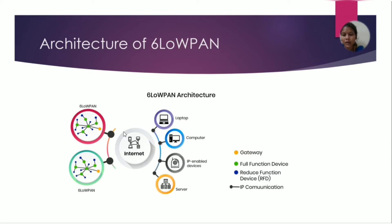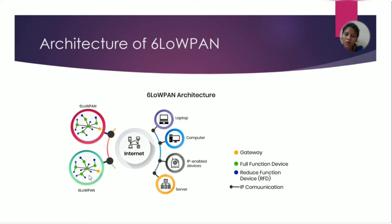If you want to communicate with 6LoWPAN, the wireless network connects wireless sensors — that is, low-power devices — and laptops, computers, and mobile phones as high-power devices. If a low-power device connects one-to-one, data is stored and communicated directly. Between low-power and high-power devices, the router acts as an H-router. Through the H-router, the internet is connected to 6LoWPAN using the 6LoWPAN protocol. For example, it acts as a mediator — that is the 6LoWPAN.